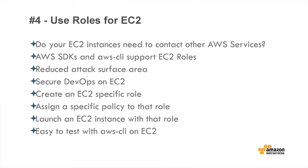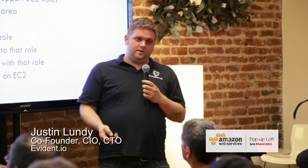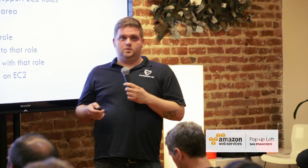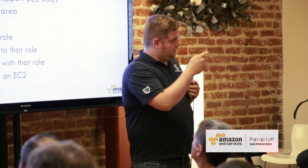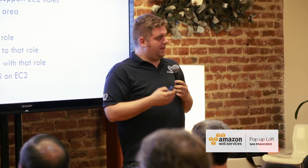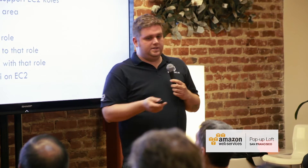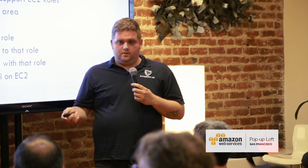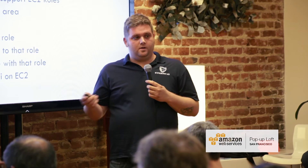Number four: use roles for EC2. The reason is you don't have your Amazon keys sitting on the local disk of your EC2 instance while it's running in the cloud. This limits potential damage if a system is compromised. When using roles for EC2, the Amazon system passes the correct credentials for that role to the instance via the SDK, so there are no keys to leave on disk and no keys to steal. If an attacker broke in, there would be no Amazon keys to find anywhere.